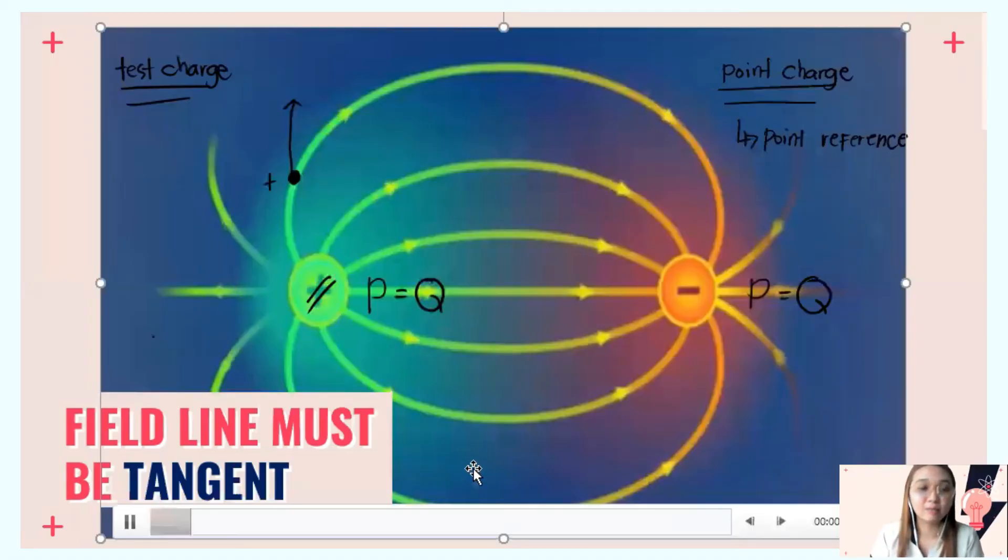For example, if we have a point charge and we place a test charge, there will be an arrow directed tangent to our field line of the point charge. We still need to consider if it's positive or negative, because the test charge can also be positive or negative.